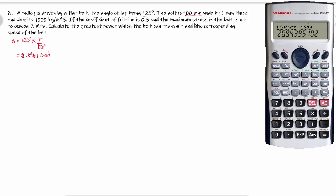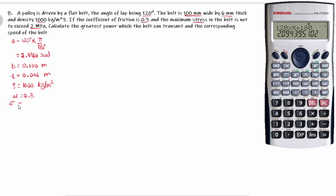The belt is 100 mm wide and 6 mm thick. Width B is equal to 100 mm, that is 0.100 meters. Density rho is equal to 1000 kg per meter cube. The coefficient of friction mu is equal to 0.3. The maximum stress in the belt is not to exceed 2 MPa, so maximum stress sigma is equal to 2 MPa, that is 2 into 10 raised to 6 Pa.